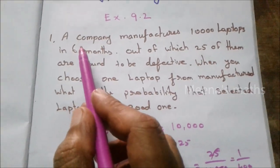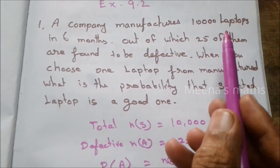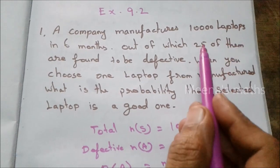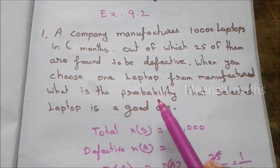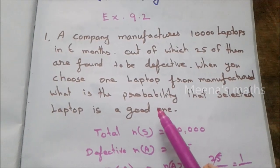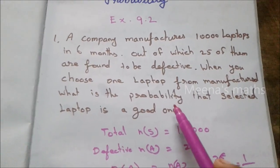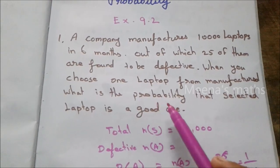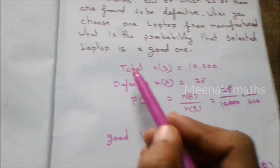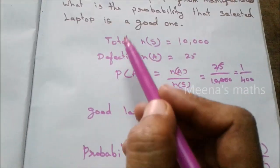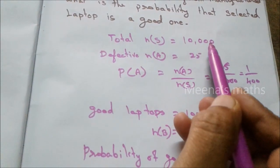The total sample space: N of S equals 10,000 laptops. Out of these, 25 are defective. Probability means chance — we will find the probability of selecting a good laptop.